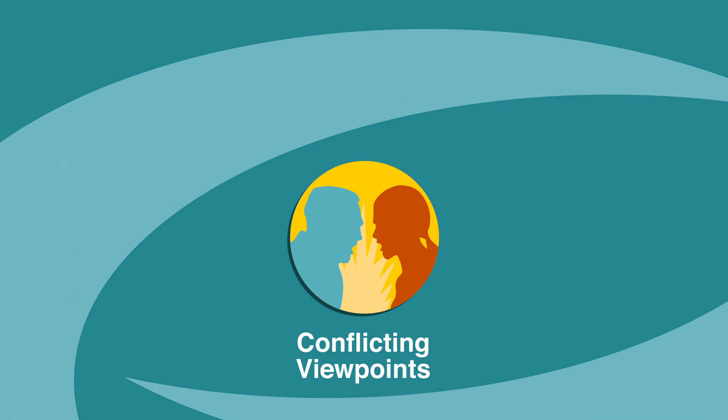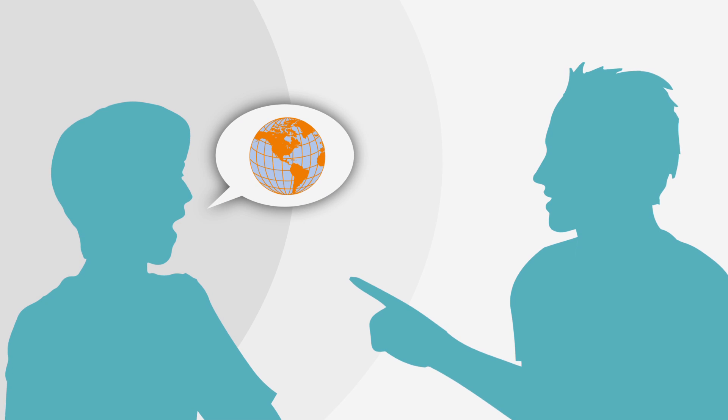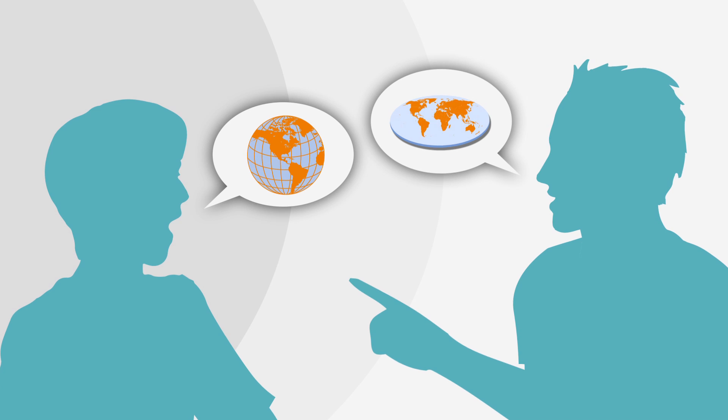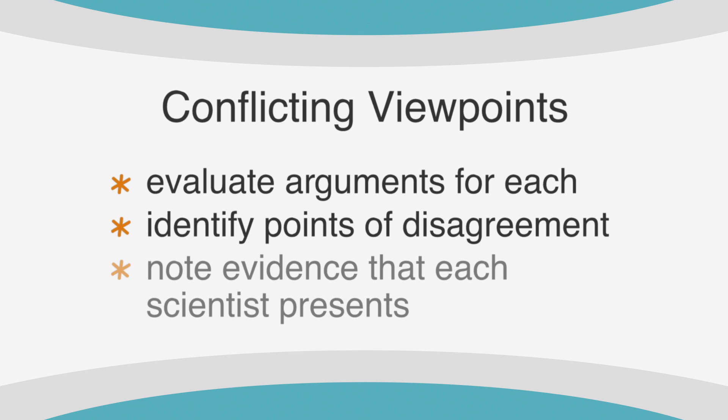Conflicting viewpoints are the third type of science passage. You'll find one conflicting viewpoints passage with seven questions. This passage will take on two or three controversial concepts. You'll be asked to evaluate the arguments for each, identify the points of disagreement, and note the evidence that each scientist presents.